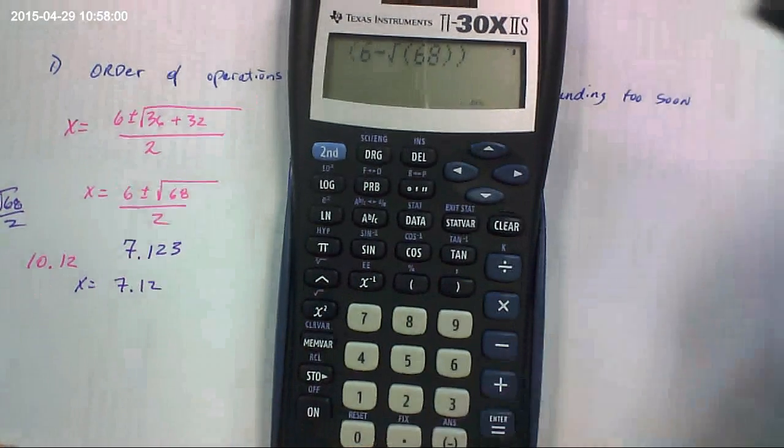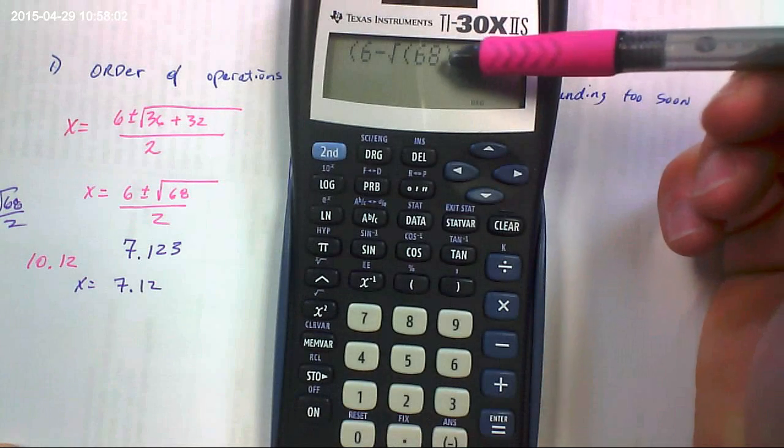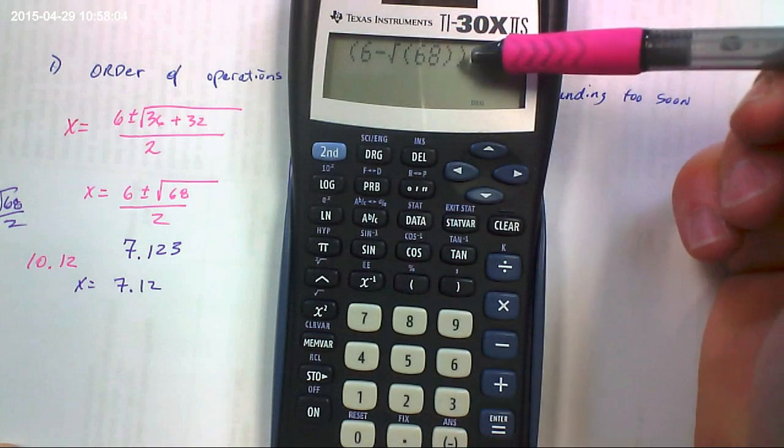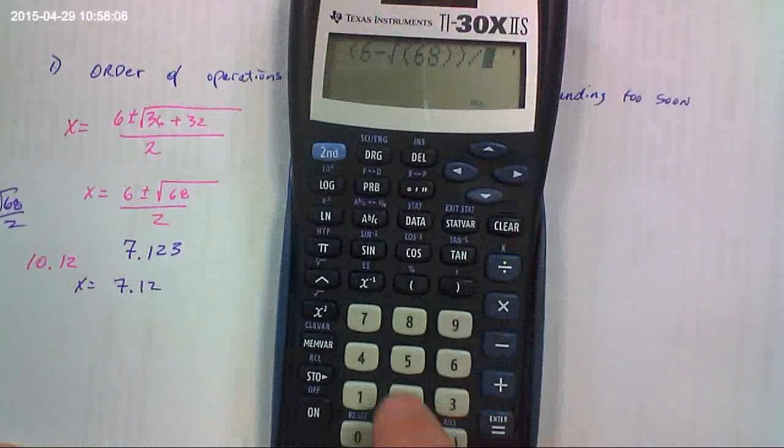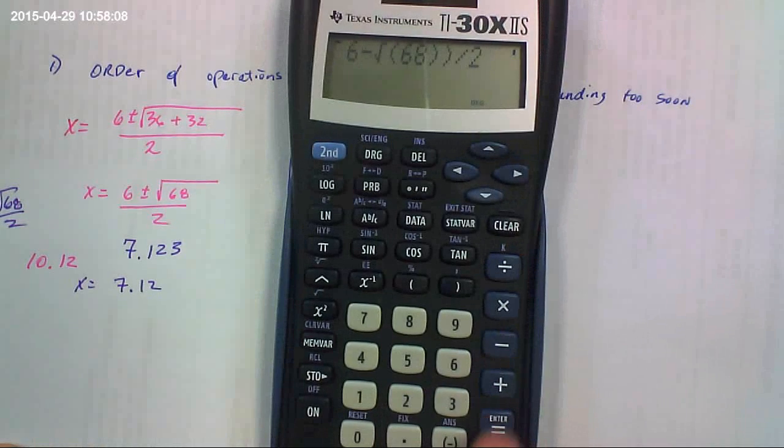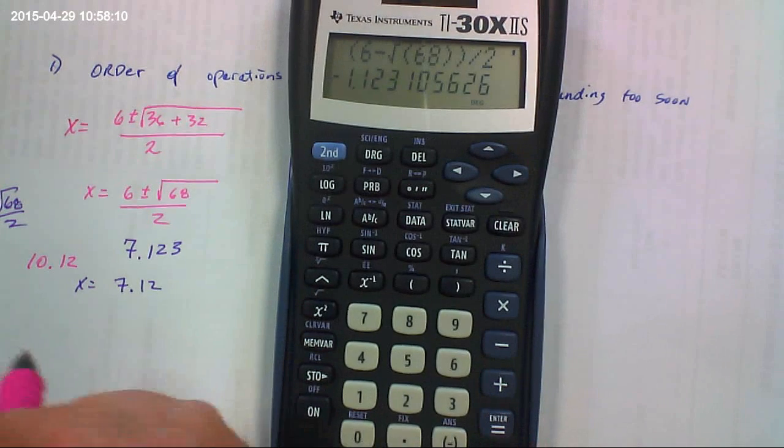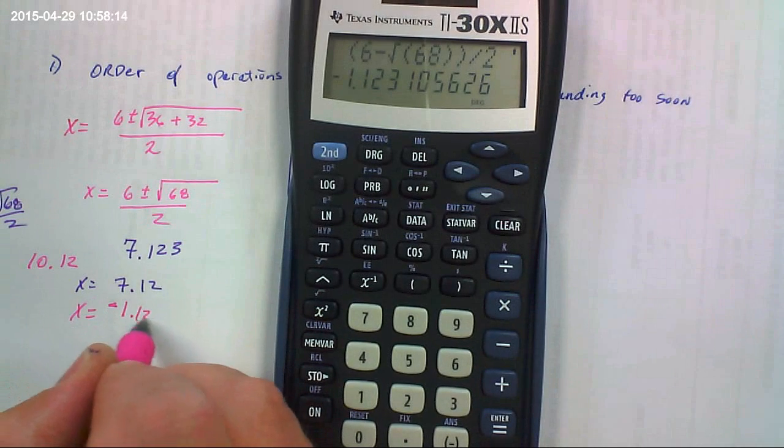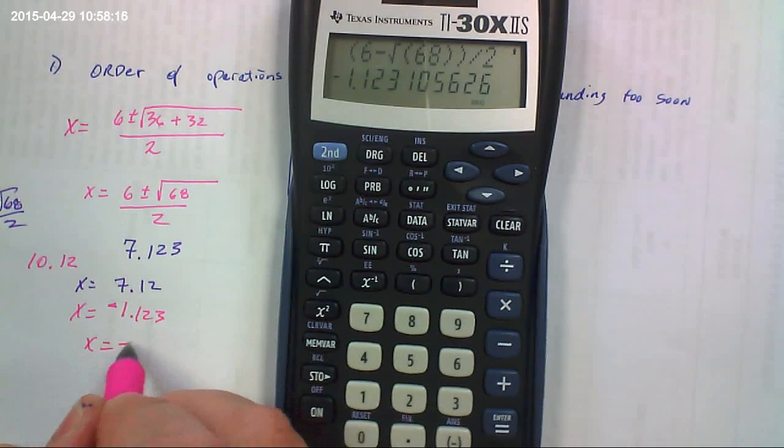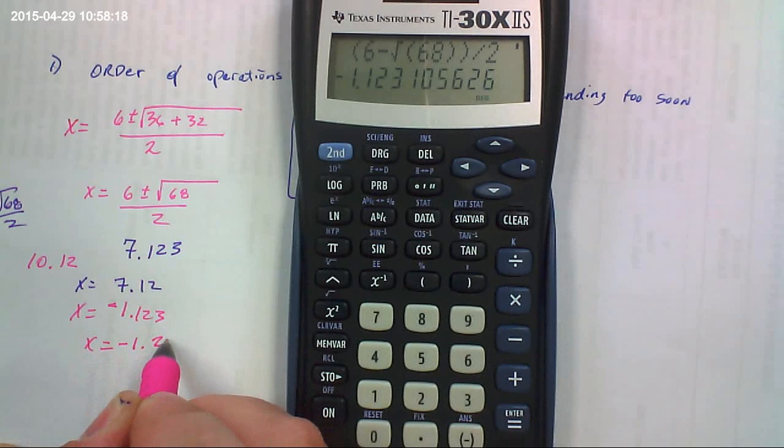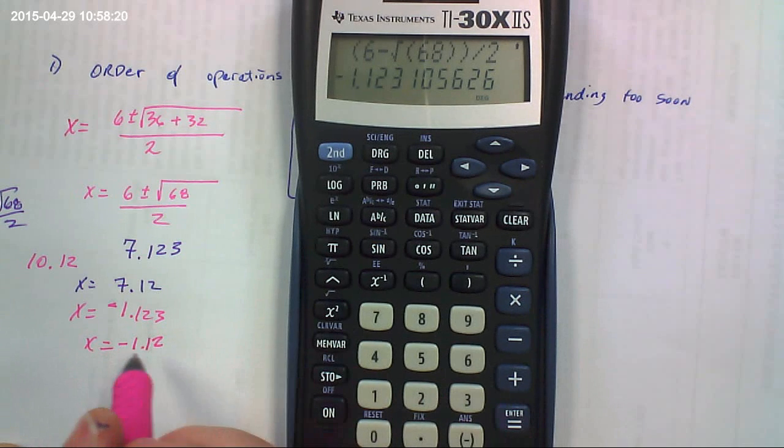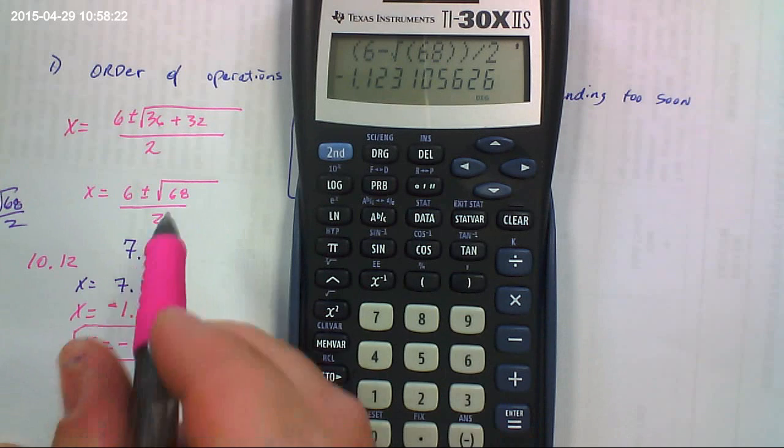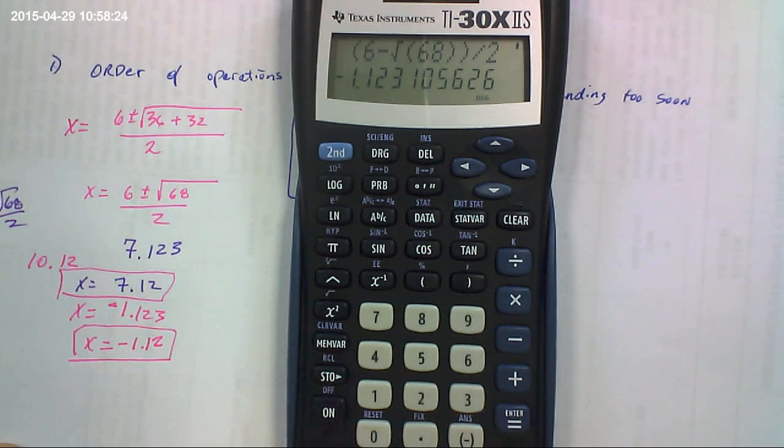Close parentheses. So I've got one parentheses here that's for the square root, and the other is for the group I've made. Divide that entire group by 2. And the other answer you get is x equals negative 1.123. So that's x equals negative 1.12. So here are our two solutions.